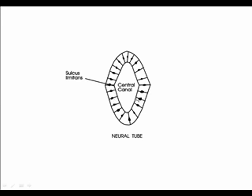Looking at the neural tube in a simple cartoon, it is made up of a central canal surrounded by neural epithelial cells. At the lateral boundaries of the central canal, there is a small outpocketing called the sulcus limitans — an important landmark that divides the neural tube into a sensory portion more dorsally and a motor portion ventrally. The notochord sits beneath.